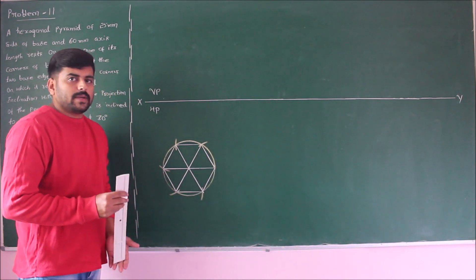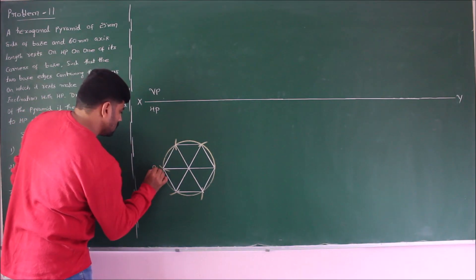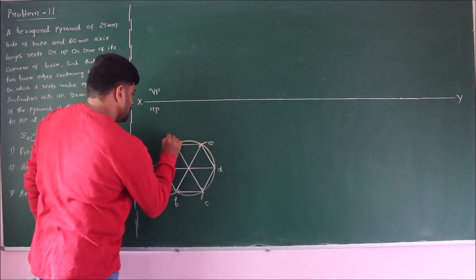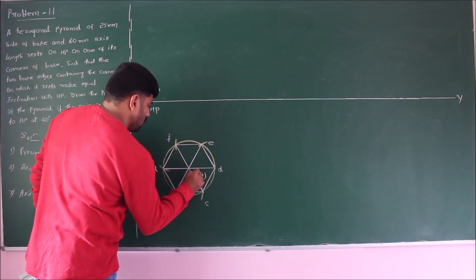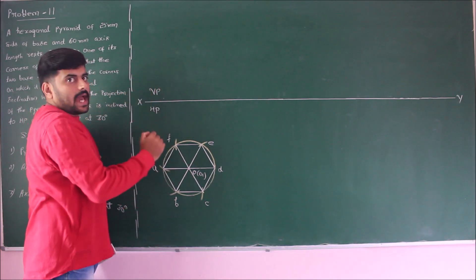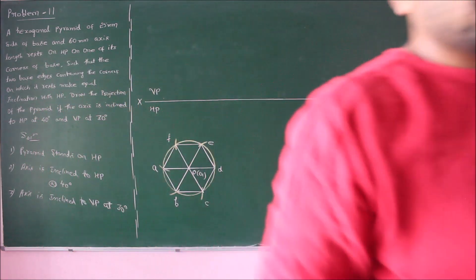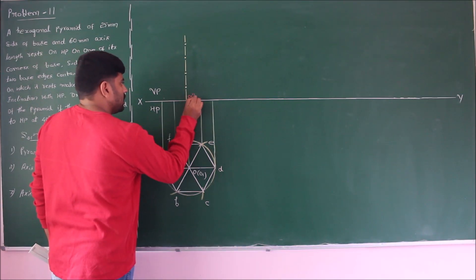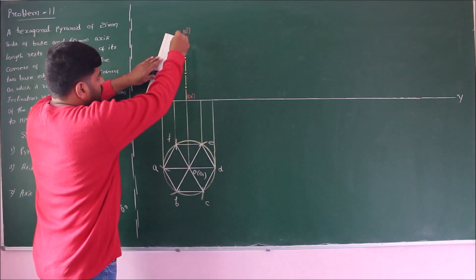Since we are solving the pyramid, draw a line to the center from all the corners to get the apparent triangular faces. This is the top view of the hexagonal pyramid with corners on either side. Marking the corners gives a, b, c, d, e, and f; the centers of the axis are o and o1. Now take the projection vertically upwards and mark the axis.